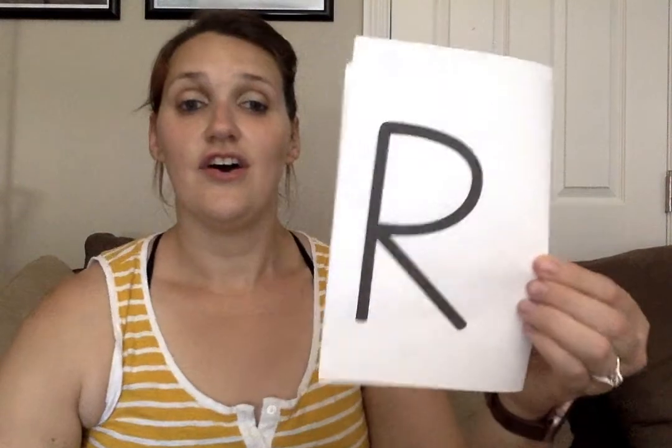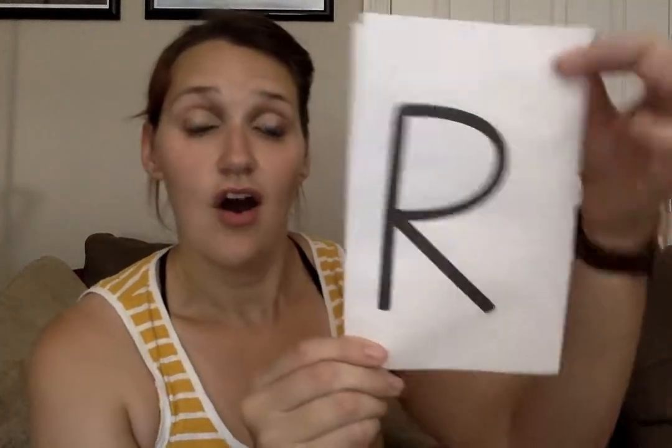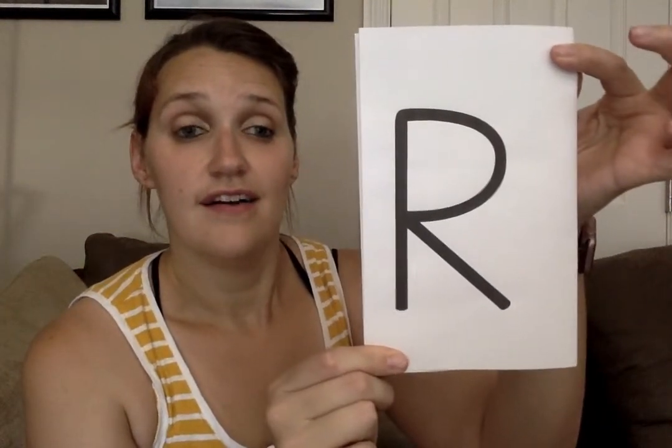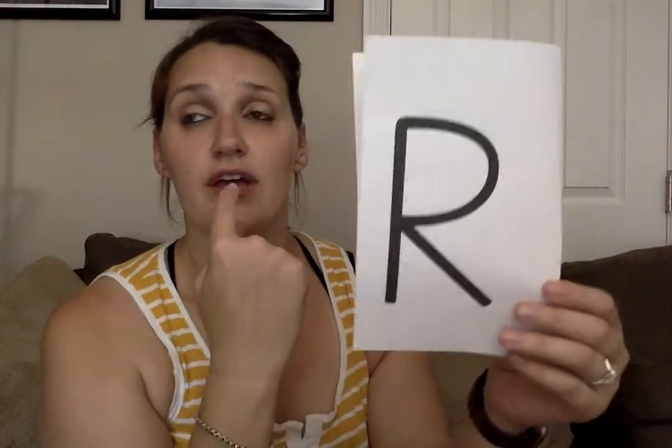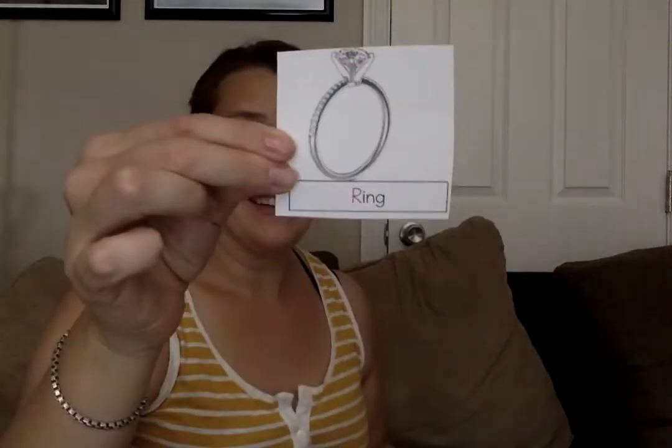Next we're going to look at our next letter, which is the letter R. R makes the sound r, like in the word ring. Ring starts with the letter R. What else starts with the letter R? It's a rainbow. Rainbow starts with the letter R.